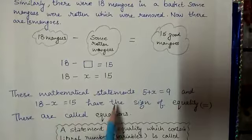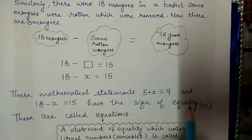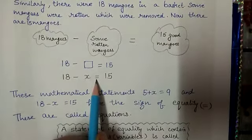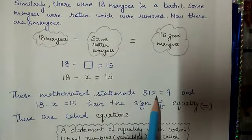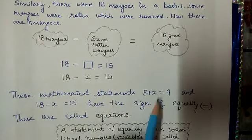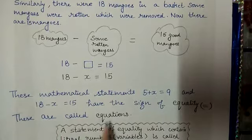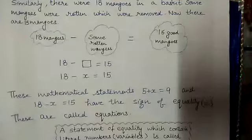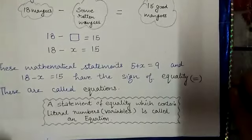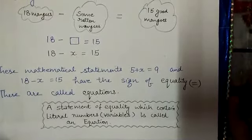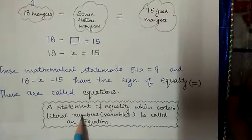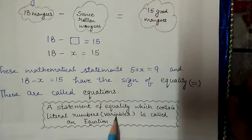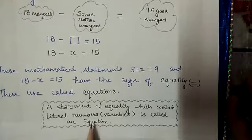we see they have the sign of equality. These statements are known as equations. So, a statement of equality which contains literal numbers, that is variables, is called an equation.